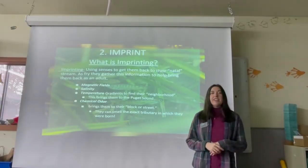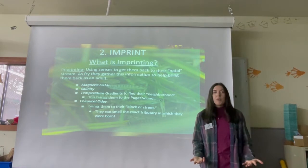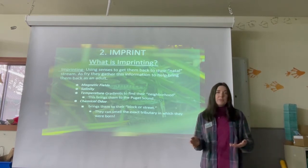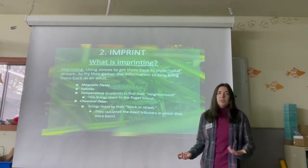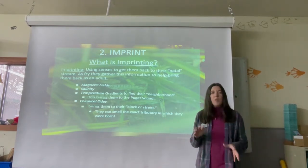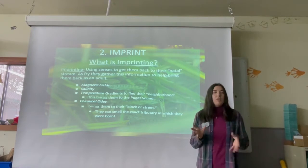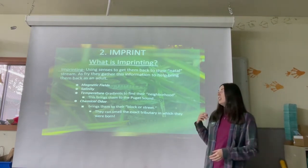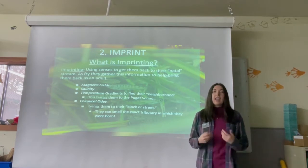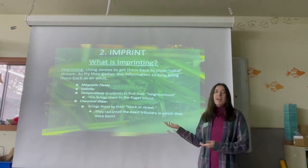The second important job for fry is to imprint. Imprinting is when they gather information and data about where they were born — their natal stream — using their different senses. This will help them later as adults when they try to return to spawn. They use things like magnetic fields, salinity, and temperature gradients to narrow down their neighborhood, such as the Puget Sound. Then they use chemical odor — essentially smelling their way home — to find the exact stream they were born in, just like how your house smells different from a friend's house.